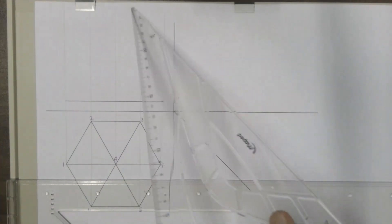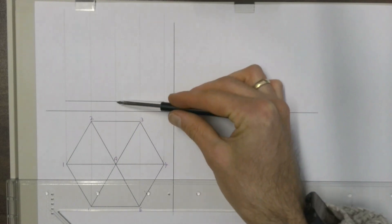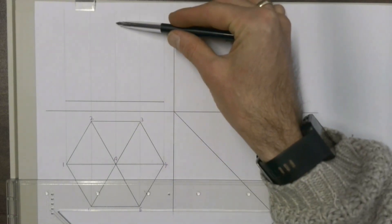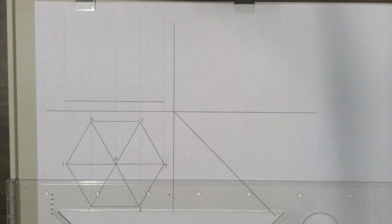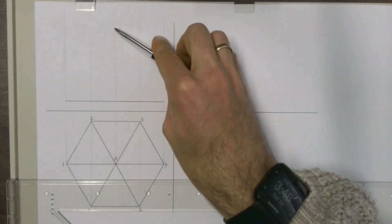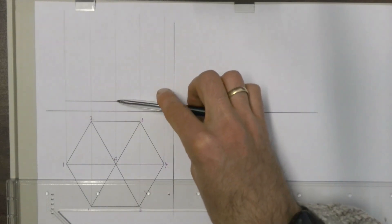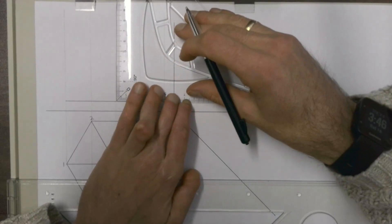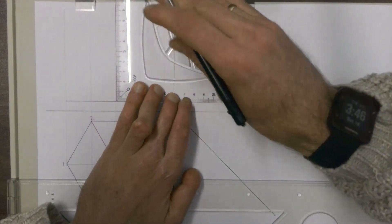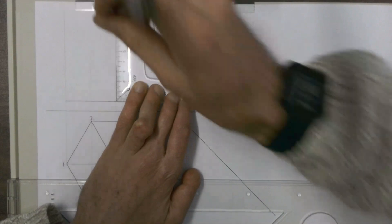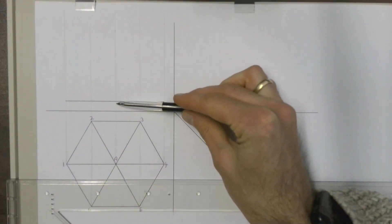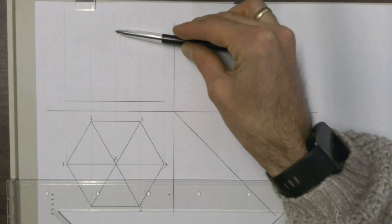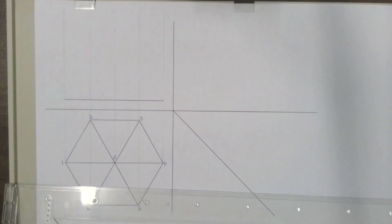We also need the height of our pyramid. The height of a pyramid is always measured from the center of the pyramid to the apex — this is called the perpendicular height. You never measure at an angle; it's always from the center point of the base straight up. The perpendicular height of the pyramid I'm drawing here will be 70mm, taken from the center point of the baseline all the way to the top.